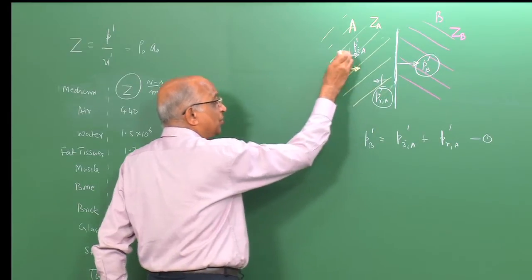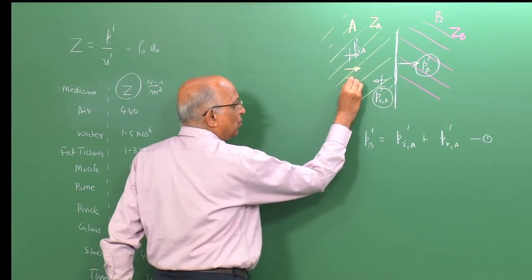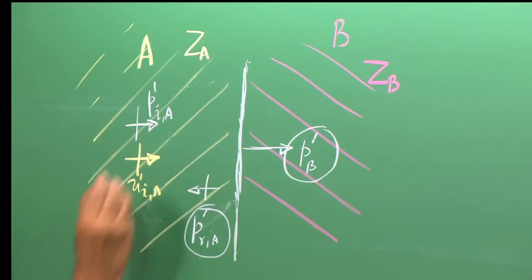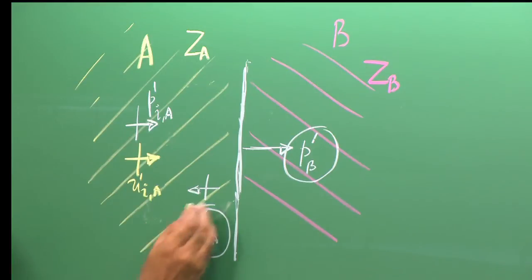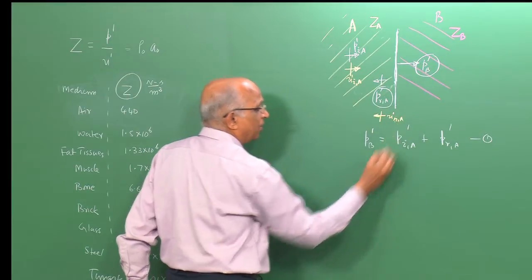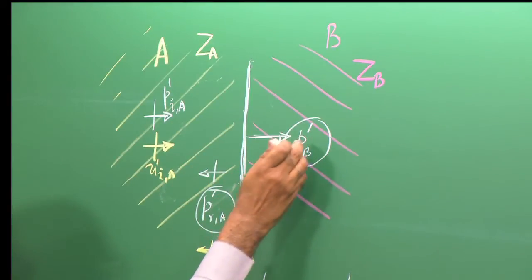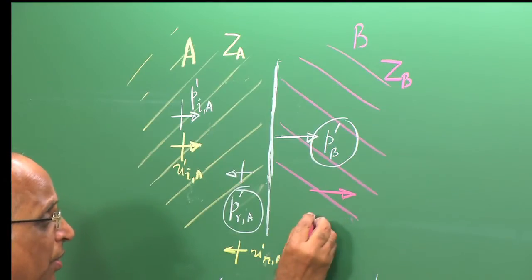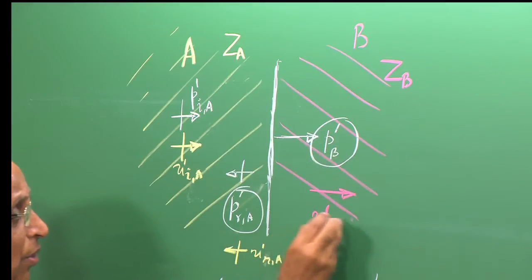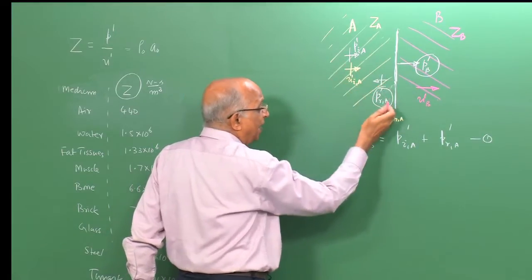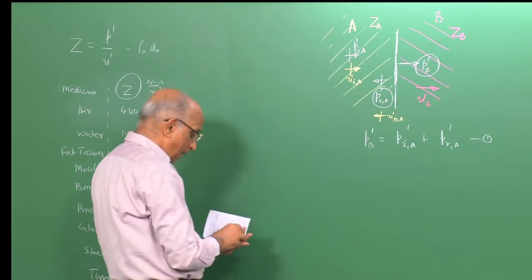The velocity fluctuation associated with the incident wave is u_ia prime. The velocity perturbation associated with the reflected wave is u_ra prime. Similarly, the velocity perturbation associated with p_b prime is u_b prime.